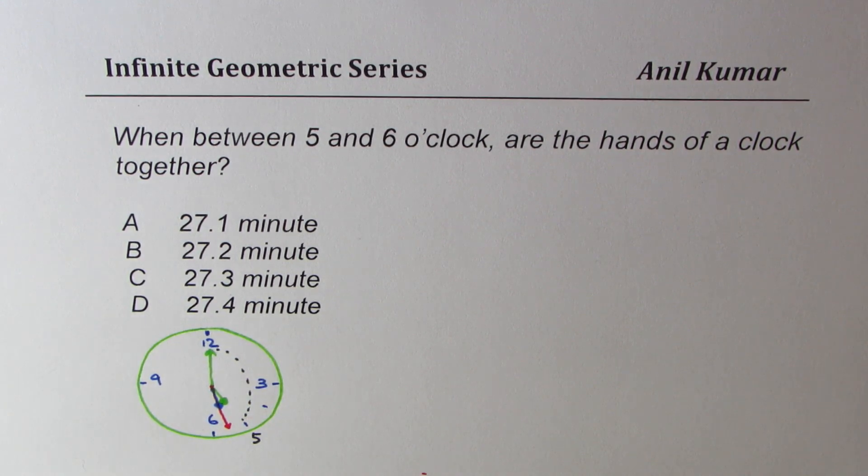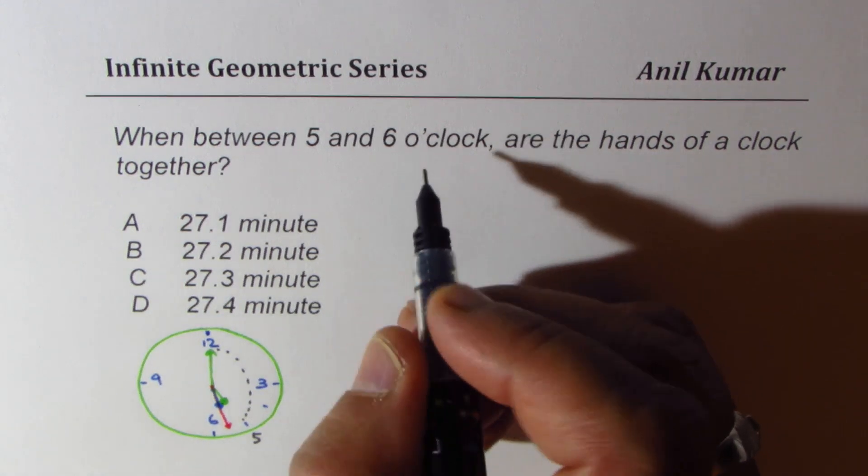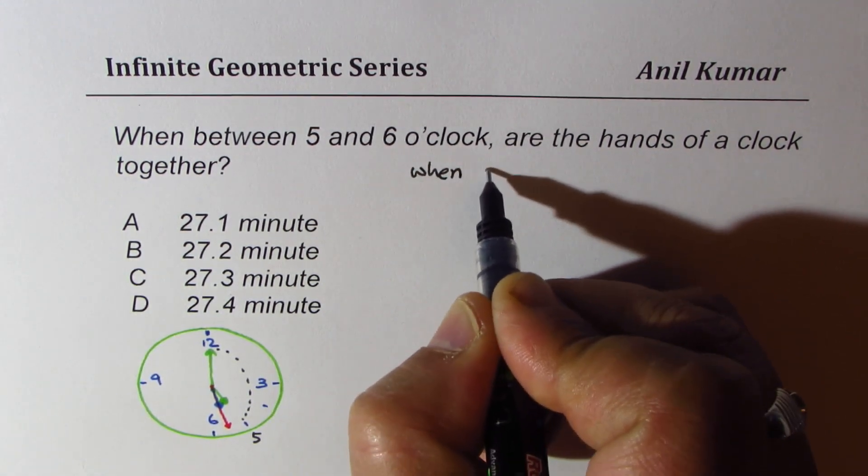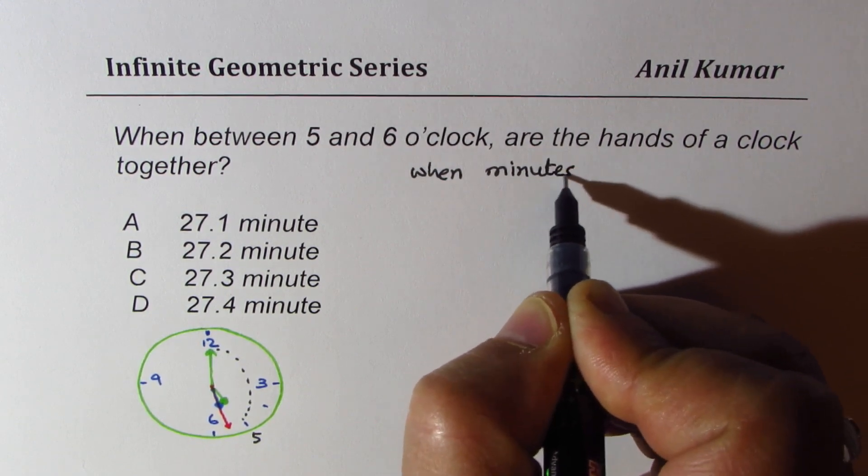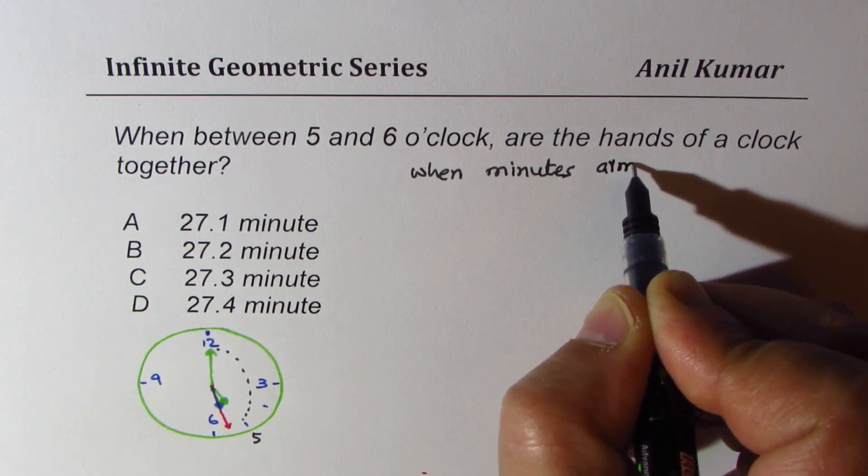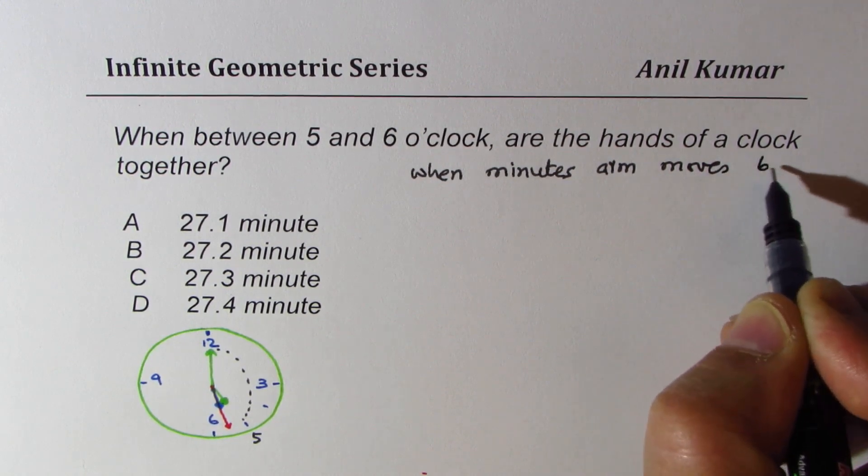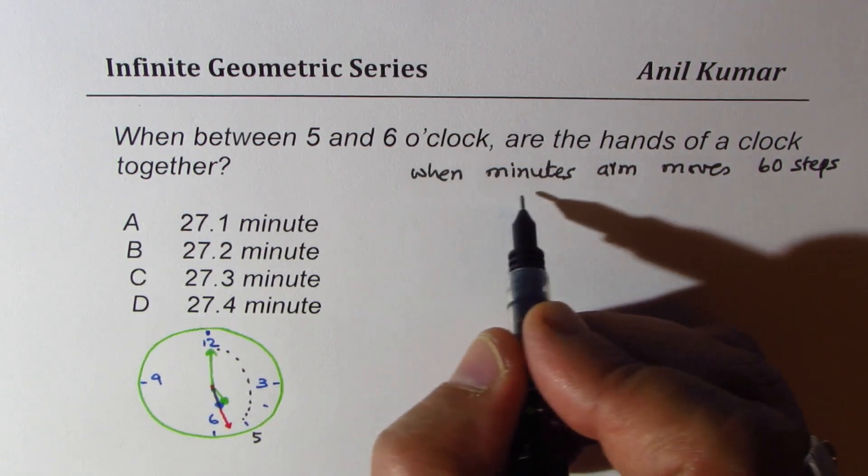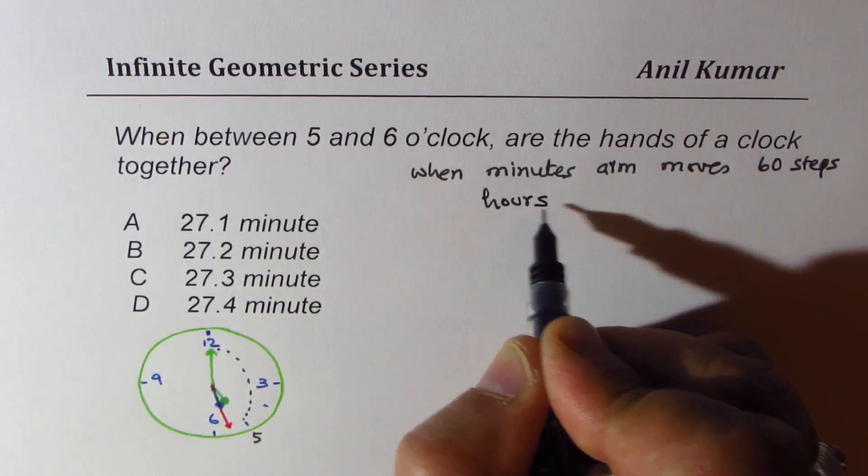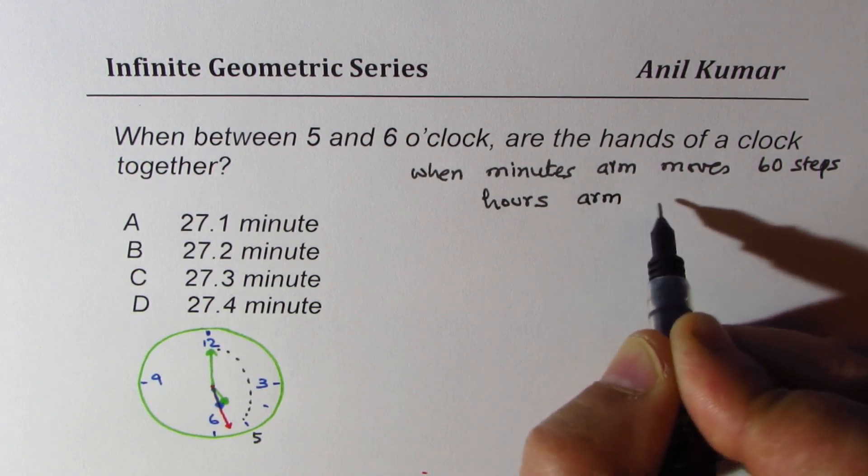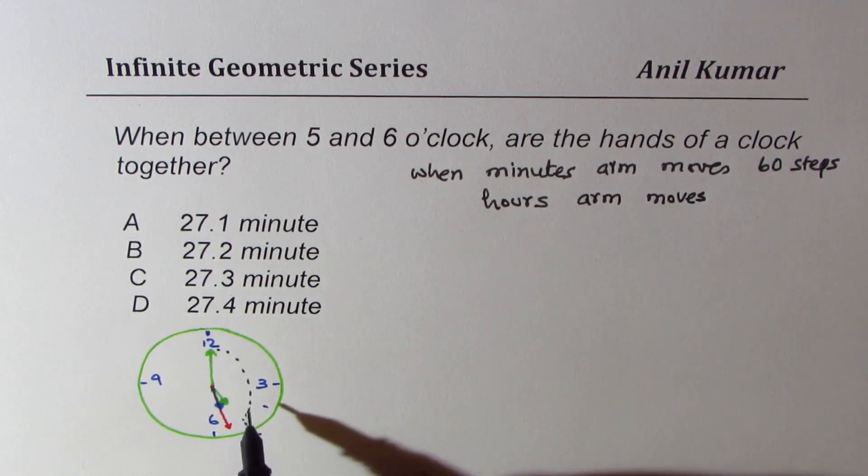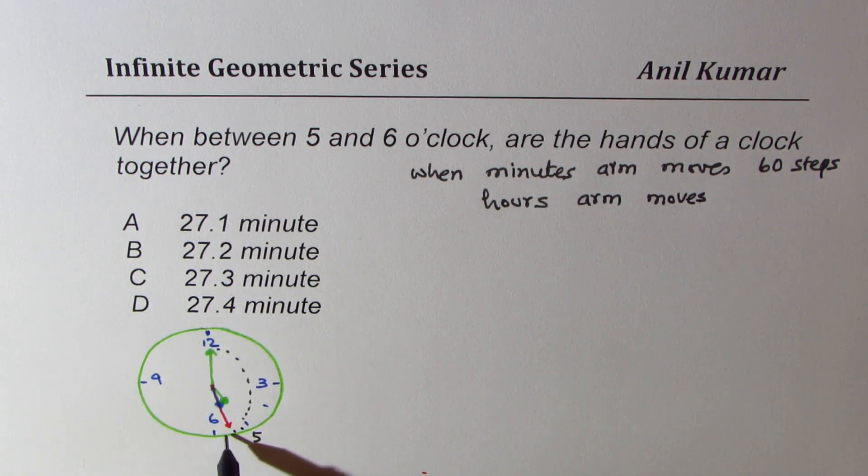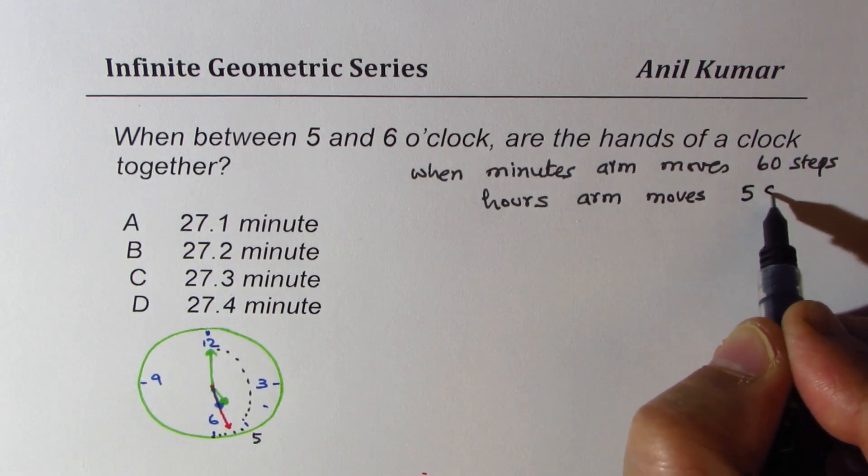So they are not one over the other. So the idea is that when the minute arm moves, let's say 60 steps, in that time the hour arm moves how many steps? Five steps, right. So it will go from here to here: one, two, three, four, and five moves—five steps.